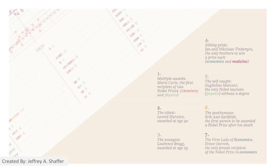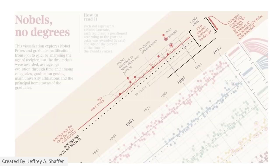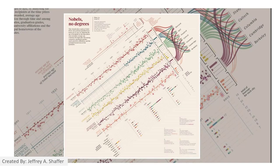There is a great annotation layer offering interesting notes about winners — the youngest, the oldest, and two siblings — color coded to match the Nobel category. At the top is a very detailed 'how to read' section that outlines all the little details throughout this visualization. You can now see why it won the gold medal award from Information Is Beautiful.